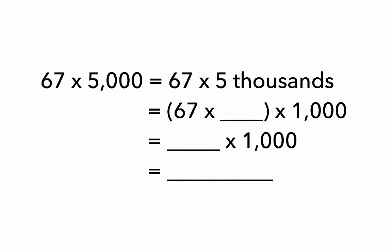Now let's work with some bigger numbers. Let's read our equation. 67 times 5,000 is rewritten as 67 times 5 thousands. What do you think we should break 5 thousands into? 1,000, and how many times does 1,000 go into 5,000? 5 times.